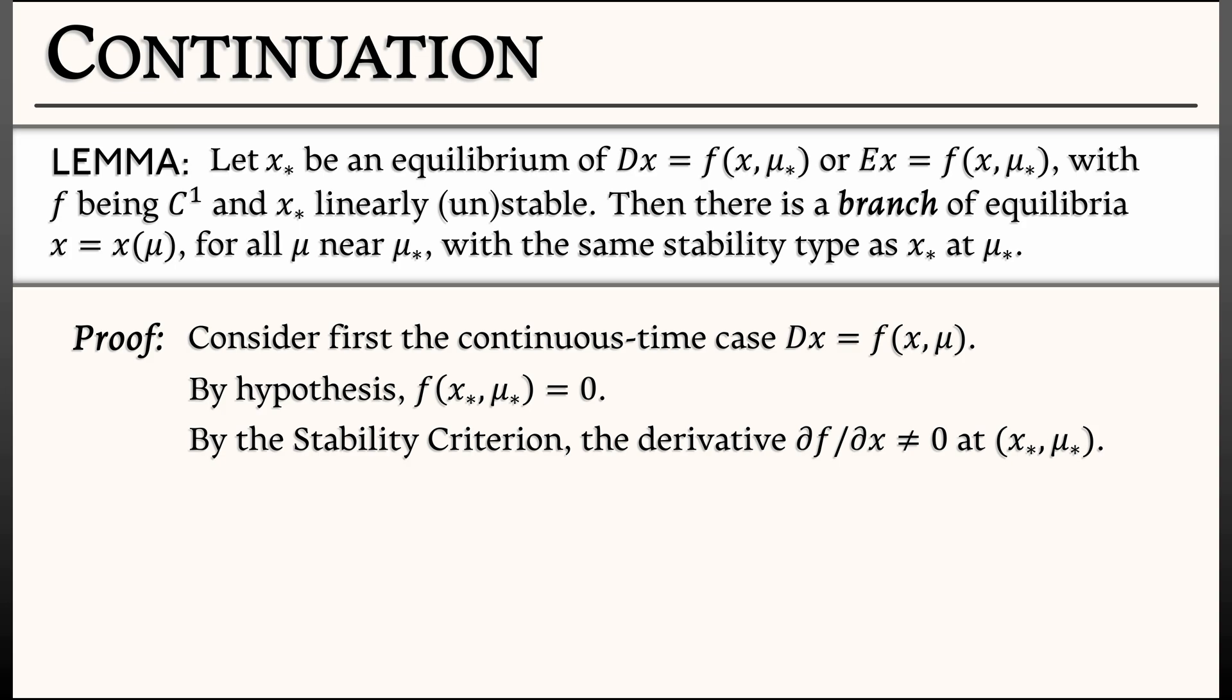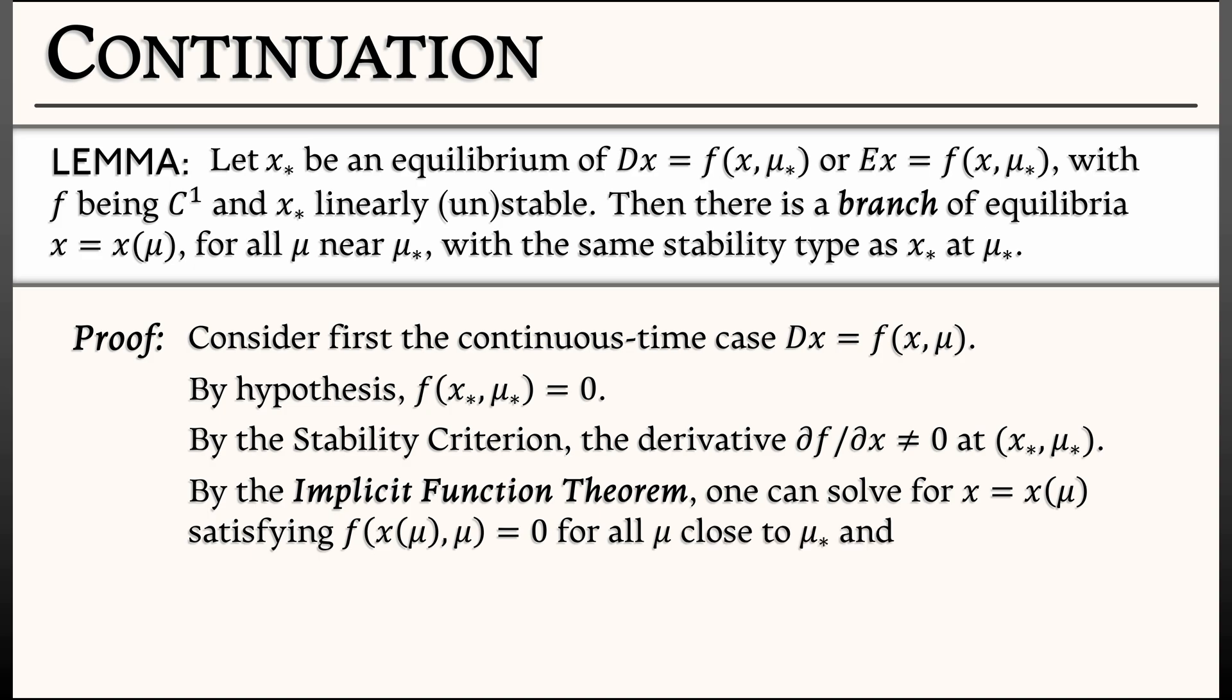Now, here's how we get the continuation. By the implicit function theorem, one can solve for x as a function of μ, satisfying f(x, μ) = 0 for all μ sufficiently close to μ*. You have a branch of equilibrium that passes through your original. By continuity of the derivative, because f is C¹, the partial of f with respect to x remains of the same sign nearby, either positive, unstable, or negative, stable. And that's it.